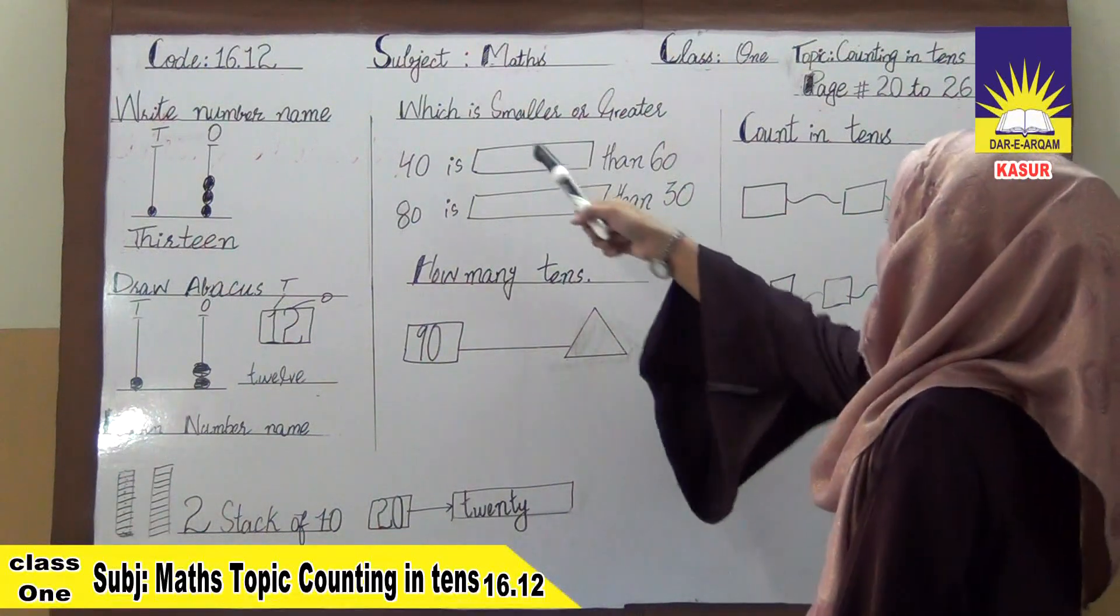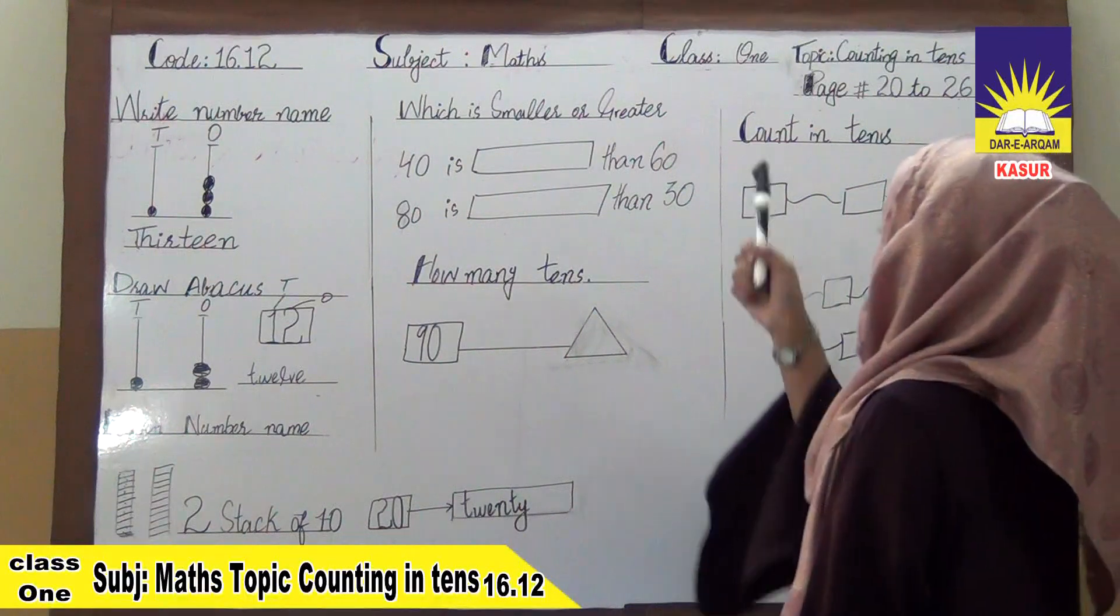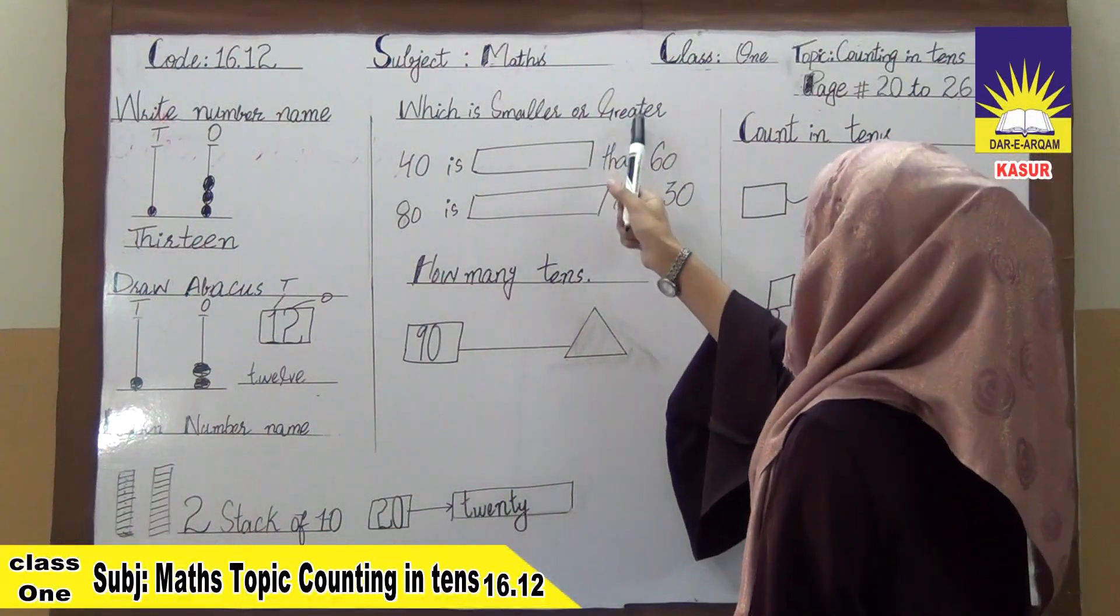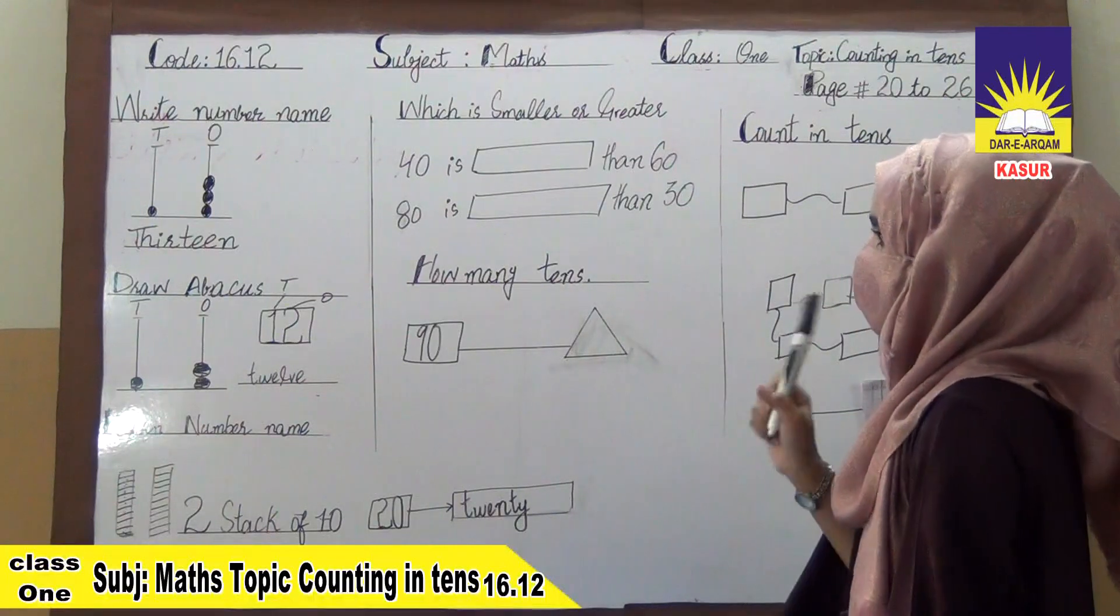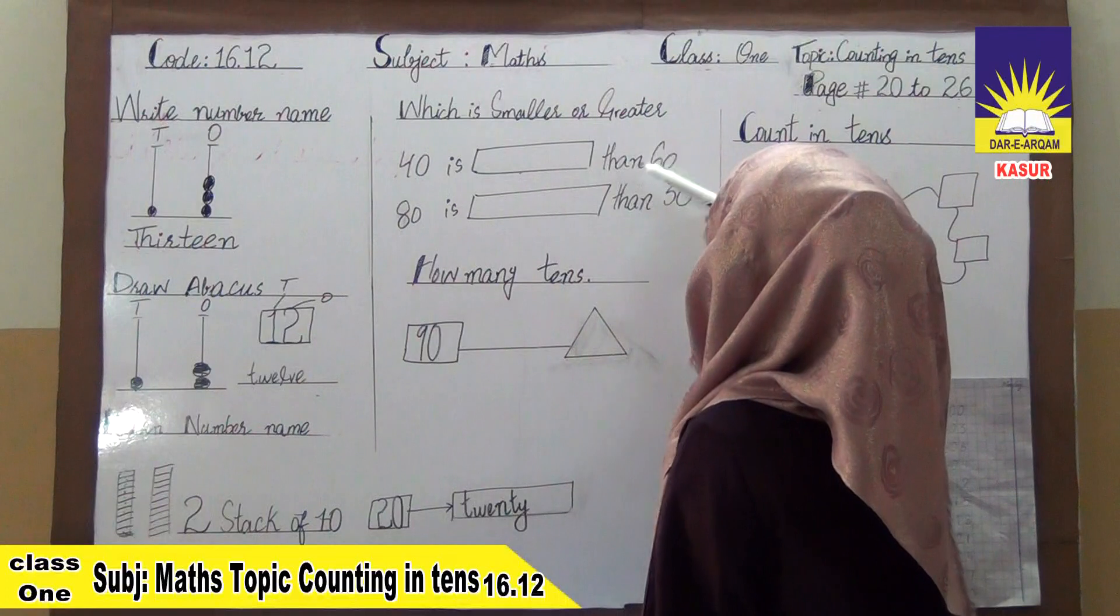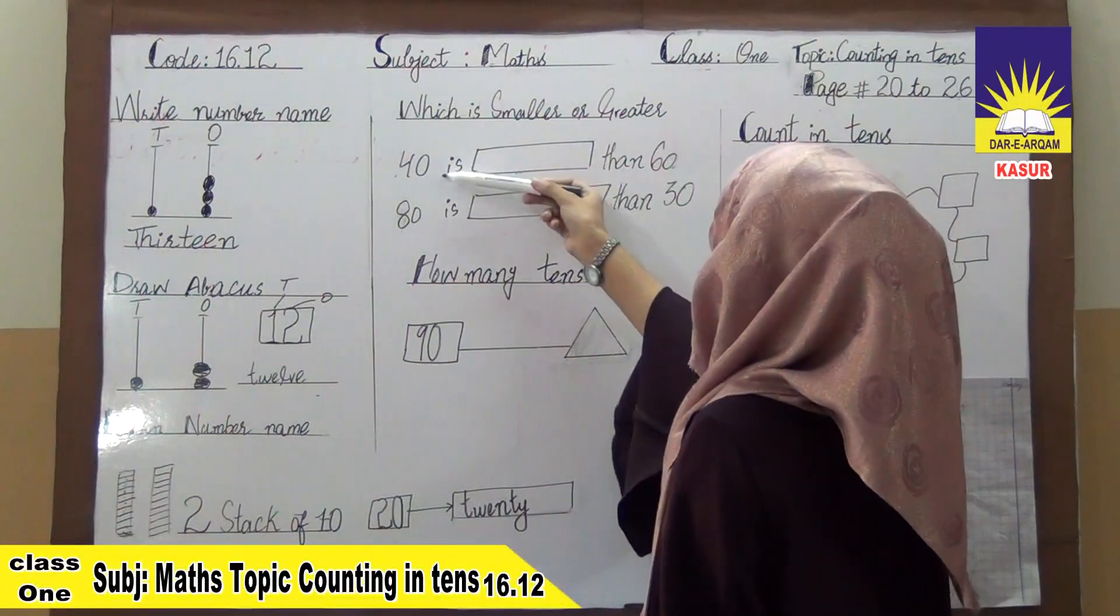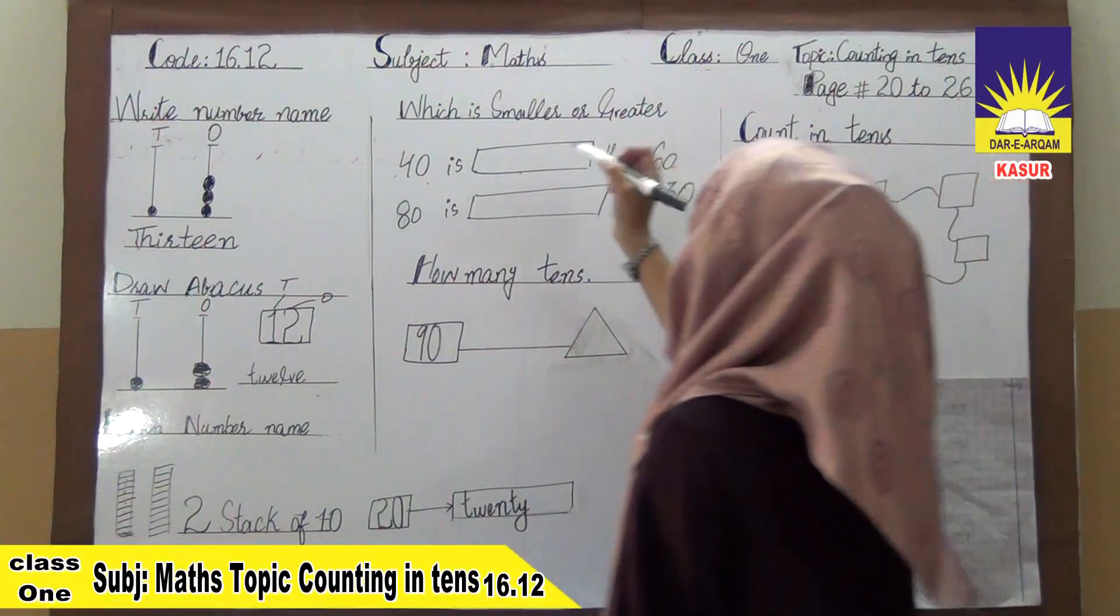Now the next question is which is smaller or which is greater? Smaller means small and greater means big. So, we can see here which number is smaller and which number is greater. Like our first question, 40 is dash than 60. So, we can see 40 is smaller than 60. We all know that 40 is smaller.